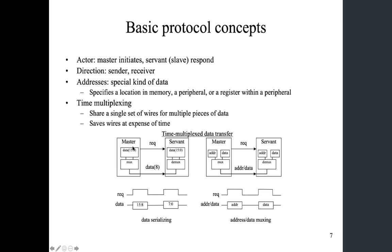What we're seeing here is a master actor and a servant actor, and we are trying to send data from one side to the other. However, the data bus is only 8-bit, whereas the data itself is 16-bit. So we have to successfully transfer all 16 bits to the servant from the master using this 8-bit bus, and we have no other choice than sending the data in two chunks: bits 15 to 8, and then bits 7 to 0.